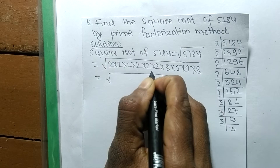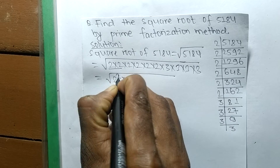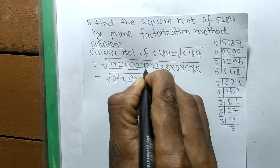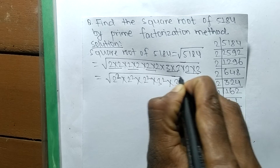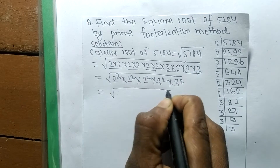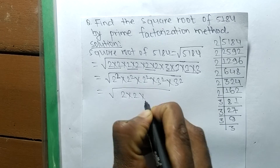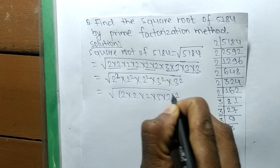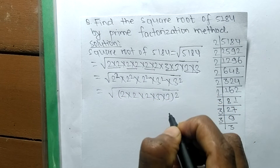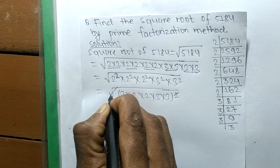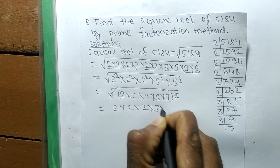After writing the prime factors, we now have to make pairs or squares. So we have 2 squared, 2 squared, 2 squared, 3 squared, and 3 squared. After making the square of all these prime factors, we can write it as 2 × 2 × 2 × 3 × 3, whole squared. Since square and square root cancel each other, the remaining expression is 2 × 2 × 2 × 2 × 3 × 3.